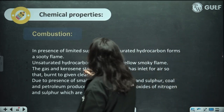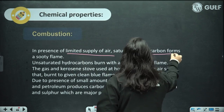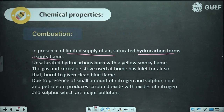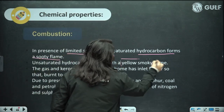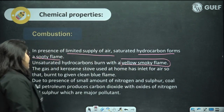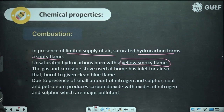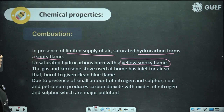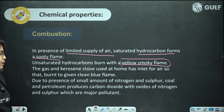In a limited supply of air, saturated hydrocarbons form a sooty flame. Unsaturated hydrocarbons burn with a yellow smoky flame. The gas and kerosene used at home has an air inlet so they burn to give a clean blue flame. Due to the presence of small amounts of nitrogen and sulfur, coal and petroleum produce carbon dioxide along with oxides of nitrogen and sulfur, which are major pollutants.